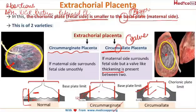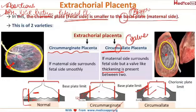On ultrasound, the fold of membrane in circumvallate placenta appears as a thick linear band or shelf-like structure. This type of placenta leads to increased risk of abortion, APH, IUGR, preterm labor, retained placenta, and increased watery vaginal discharge, also called hydrorrhea gravidarum.